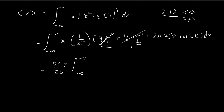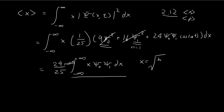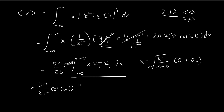We can pull out the cosine ωt because it's not related to x, leaving the integral of x times ξ₀ ξ₁ dx. To solve this integral, we apply the alternative formulation of x using ladder operators. We can express x in terms of a+ and a-, and you'll see that it saves us a bit of time in the calculations.